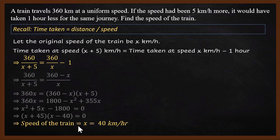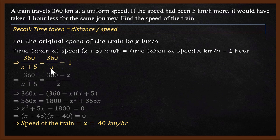The original speed of the train is 40 kilometers per hour. We can verify: 360 divided by 40 is 9 hours, and 360 divided by 45 is 8 hours. So going at 45 km/h saves exactly 1 hour. The answer is confirmed correct.